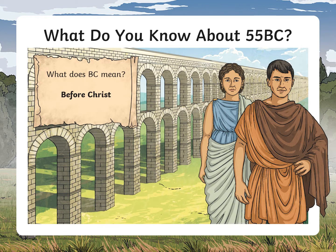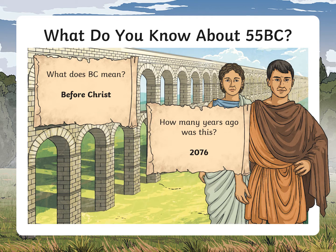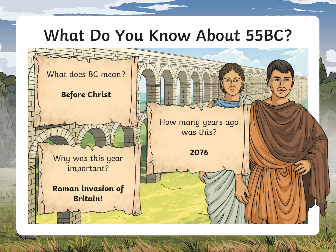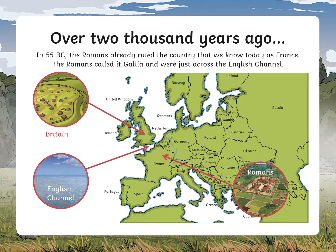BC does of course mean Before Christ, so before the birth of Jesus. Even better if you can tell me what AD stands for as well. How many years ago was it? Well, 55 years before Christ — it is now the year 2021 AD — so what we have to do is add 55 to 2021, which gets us 2076 years ago. Quite a long time. And why was it important? Well, this was the first attempted invasion of Britain by the Romans — over 2000 years ago was when the Romans first tried to invade Britain.